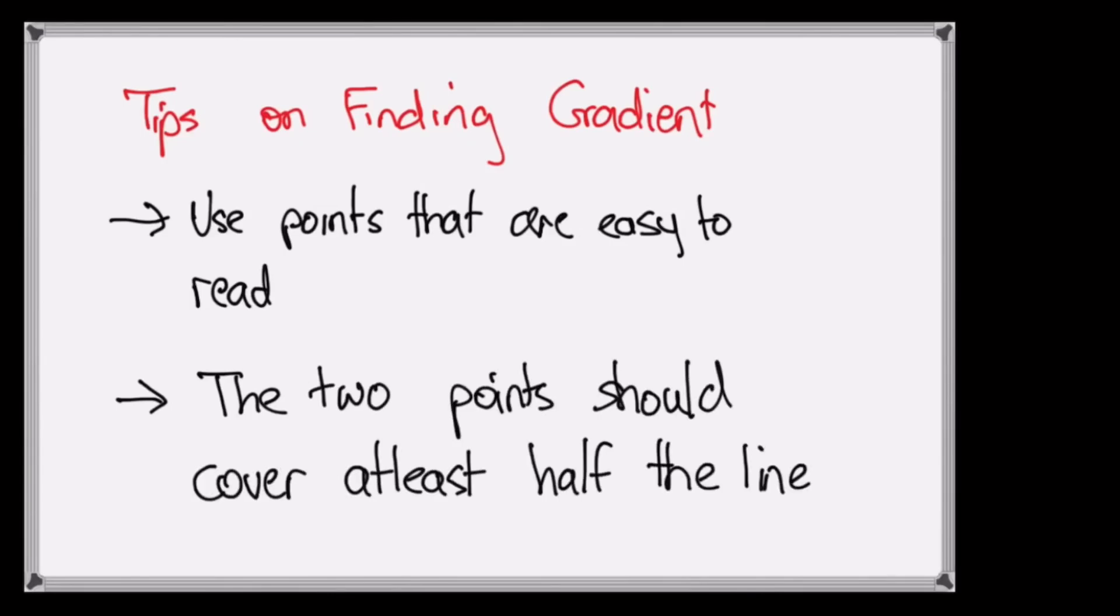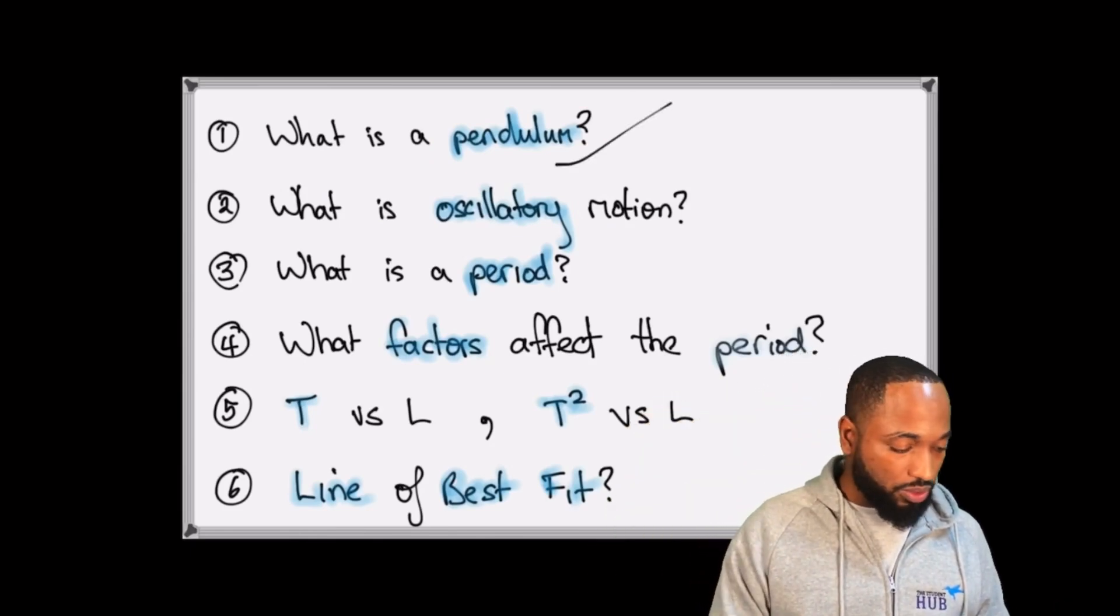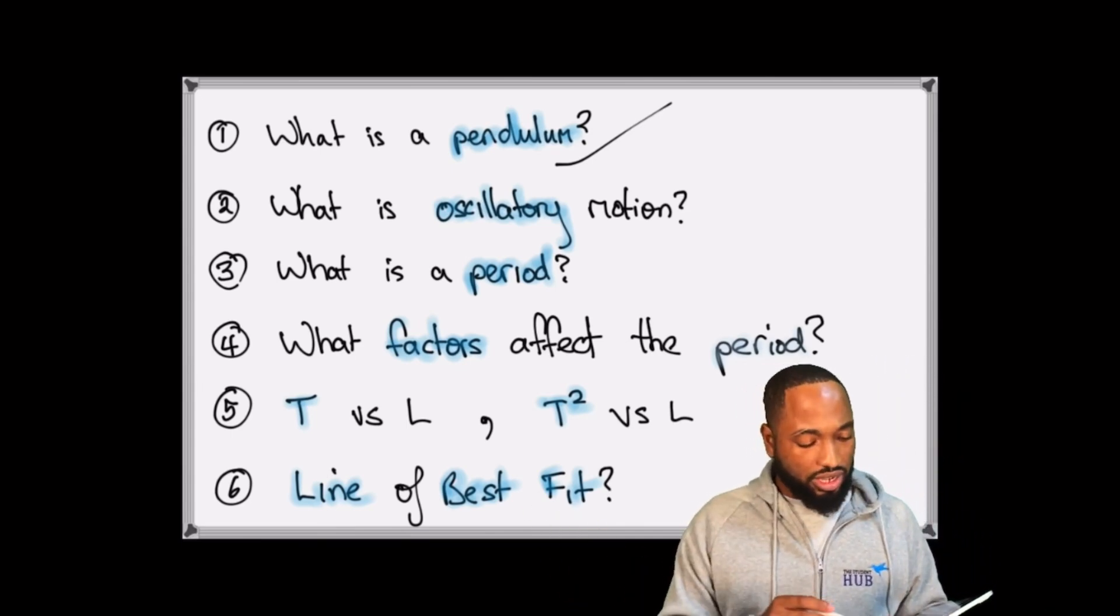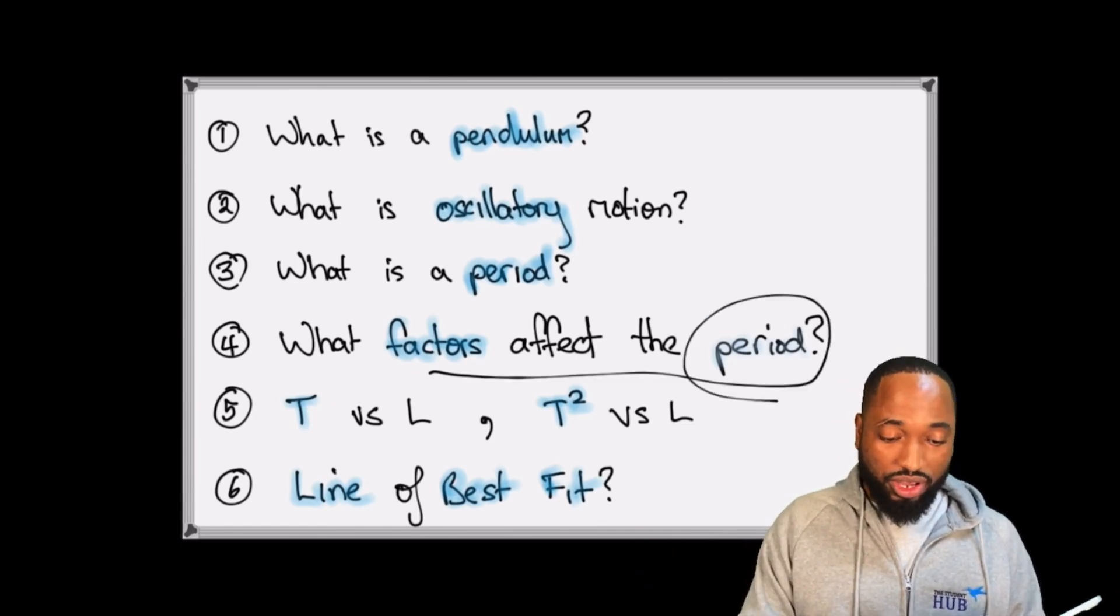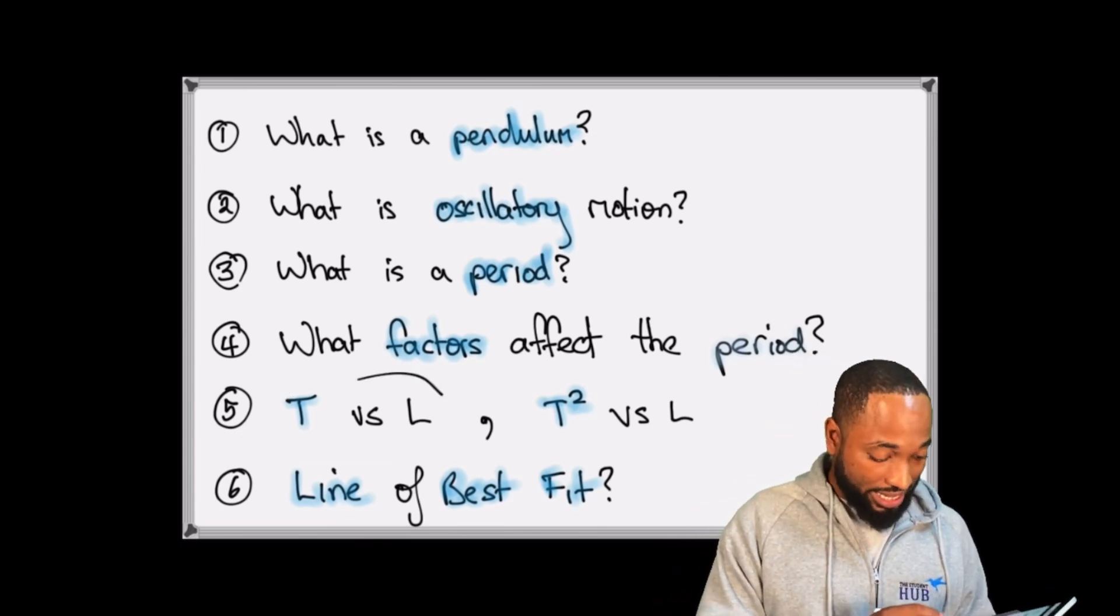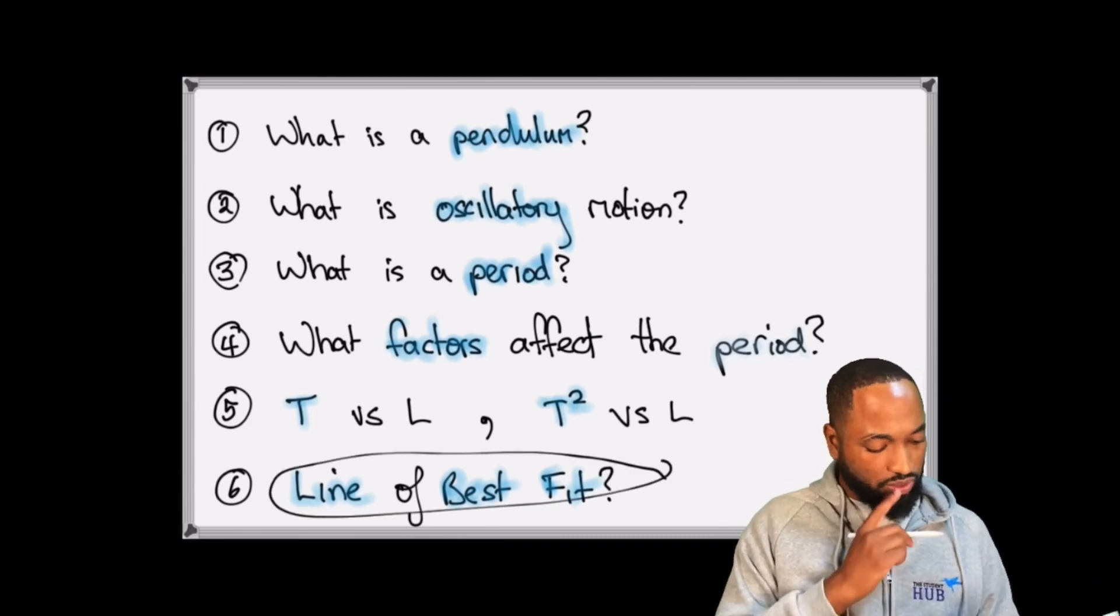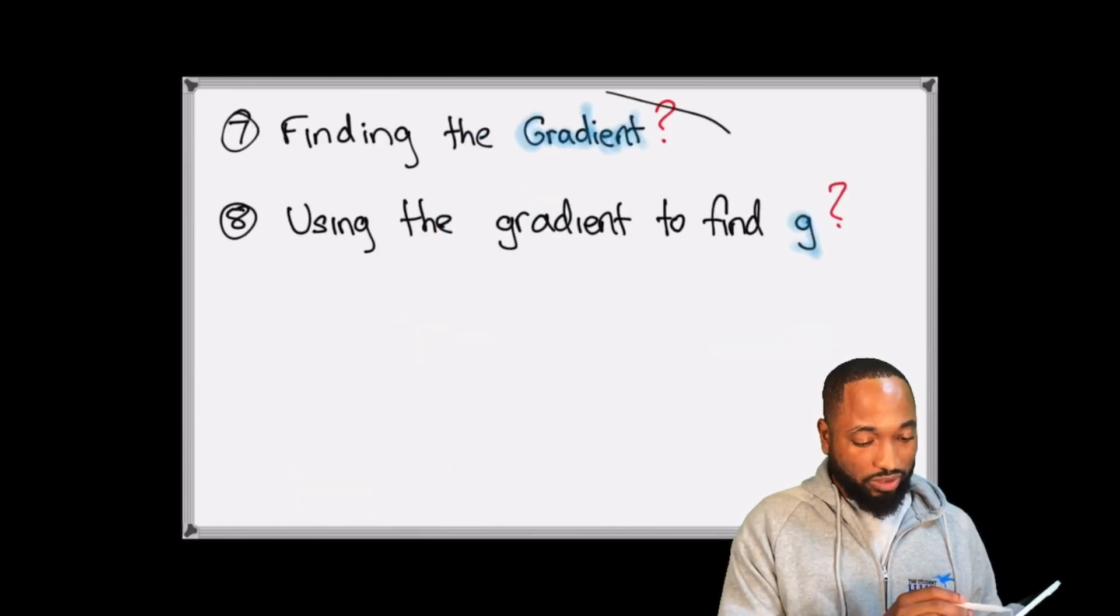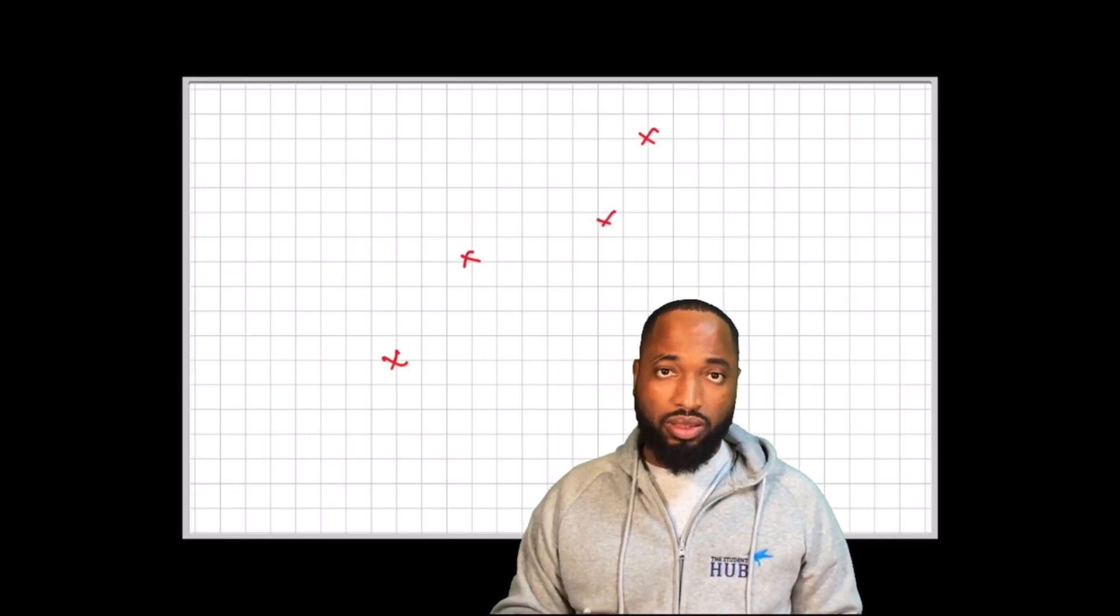So use points that are easy to spot the x and y coordinate, but more importantly use points that have a kind of 50% distance. This red app - so just to recap now, you know what is a pendulum: weight suspended, free to swing. Oscillatory motion: moving about a point, to and fro, backward and forward, left to right. What is a period? You know that a period is the time taken for one complete oscillation. What factors affect the period? You know that only length and gravity can affect the period. You know how this graph looks, you know how to get this graph, you know how this graph looks, you know how to get that graph, you know how to plot. We didn't talk about the line of best fit. Hmm, let's talk about that just now. You know how to find the gradient, you know how to use the gradient to find g.